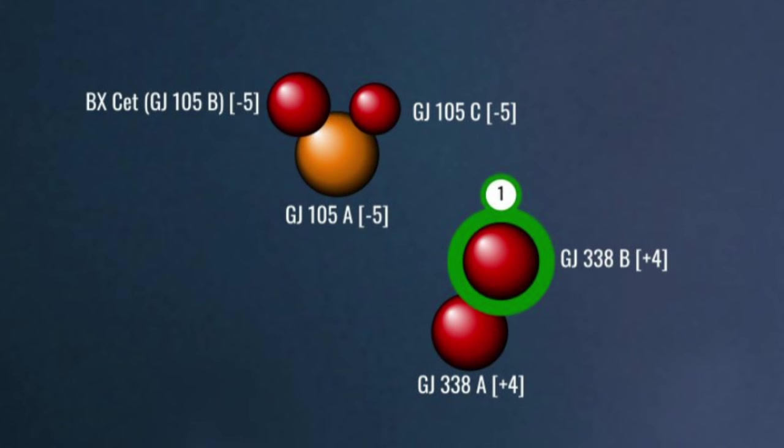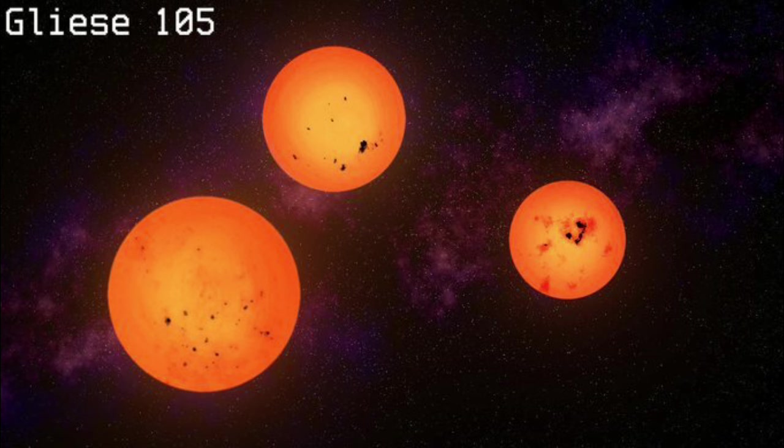Seemingly right next to 338, but actually nine parsecs south of it, is the triple star system Gliese 105, an orange K-type star, about 70% the mass of the Sun, orbited by two red dwarfs, one at a distance of 24 AU, the other at a whopping 1200 AU. The outer star, with the very 80s-sounding name of BX CETI, is a BY Draconis variable. Its surface is so covered in star spots that they can be seen from across space.